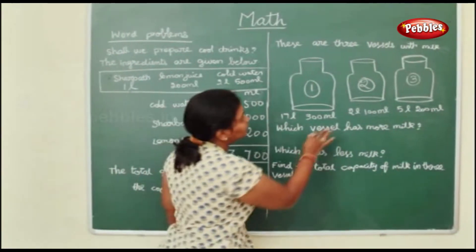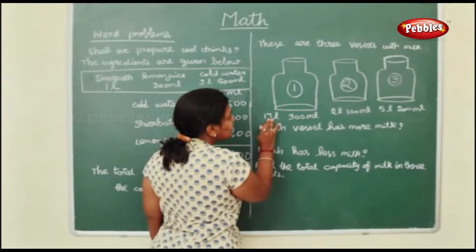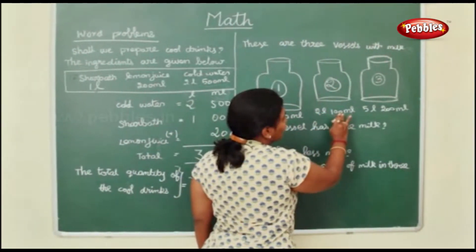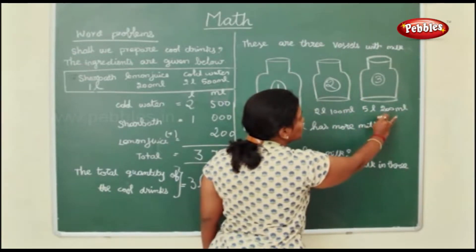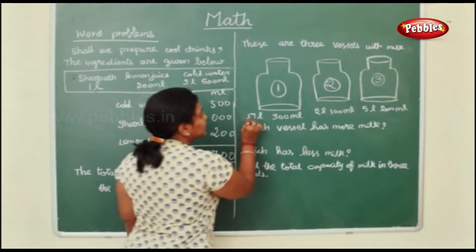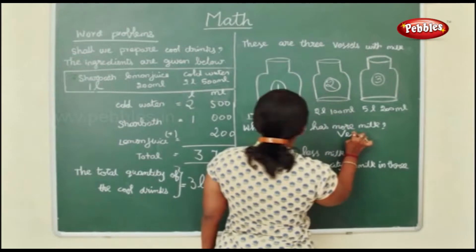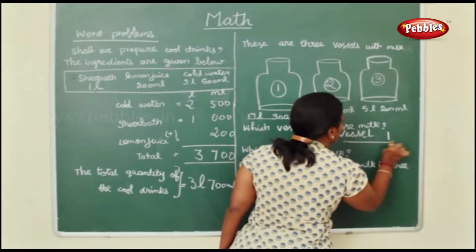And next, there are 3 vessels with milk. Vessel 1, vessel 2, vessel 3. In vessel 1 you have 17 liters and 300 milliliters of milk. Vessel 2 has 2 liters and 100 ml milk. Vessel 3 has 5 liters and 200 ml of milk. So which vessel has more milk? This vessel, vessel 1. So I will write vessel 1 has more milk.